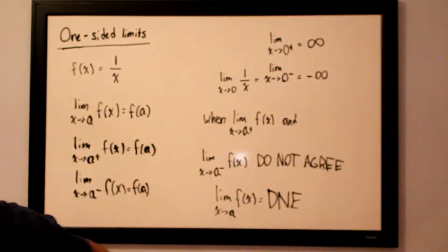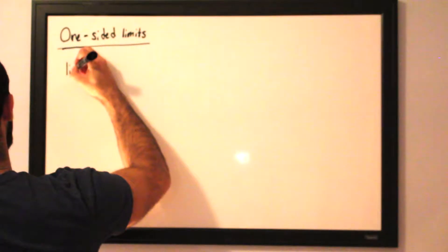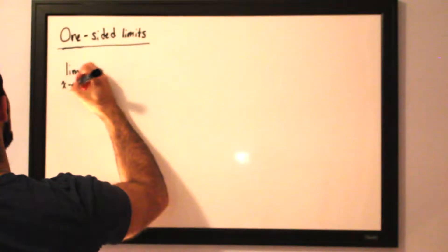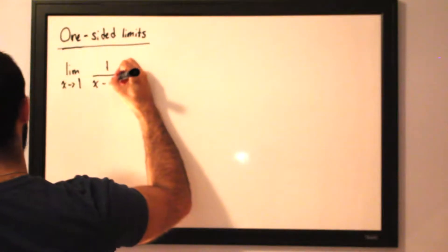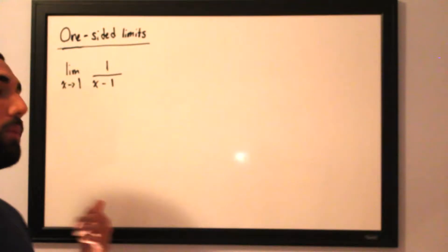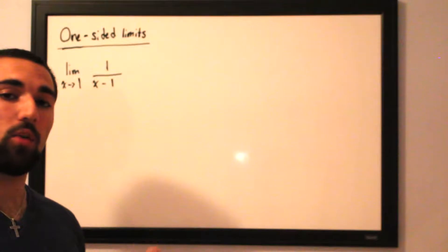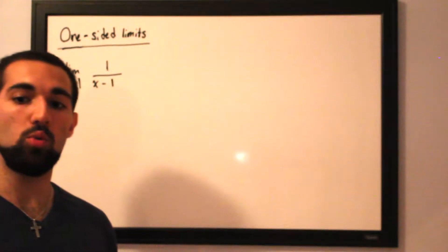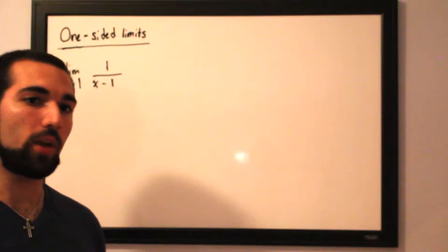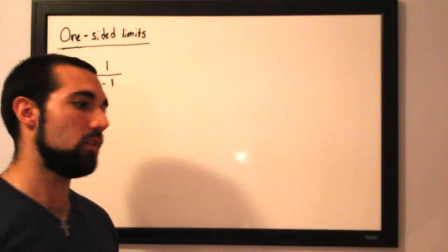Let's move on to a couple of examples to make this clear. We'd like to evaluate the limit as x approaches 1 for the function 1 over (x minus 1). As you may have noticed, this function cannot be manipulated in any way we've learned so far. We need to evaluate it from both the right and the left. If these two limits agree with each other, we can evaluate the limit; if they do not agree, the limit does not exist.